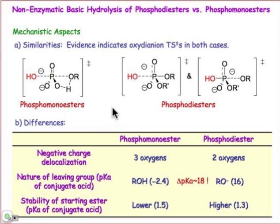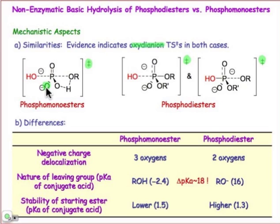The similarities are that evidence indicates that the transition states — a single transition state in the case of the phosphomonoester, and two transition states in the case of the phosphodiester — all involve an oxydianion transition state structure, meaning there are two negative charges in the transition state. These negative charges are present in both transition states found for the phosphodiester hydrolysis mechanism. The outgoing group is picking up the second negative charge that existed from that trigonal bipyramidal intermediate.